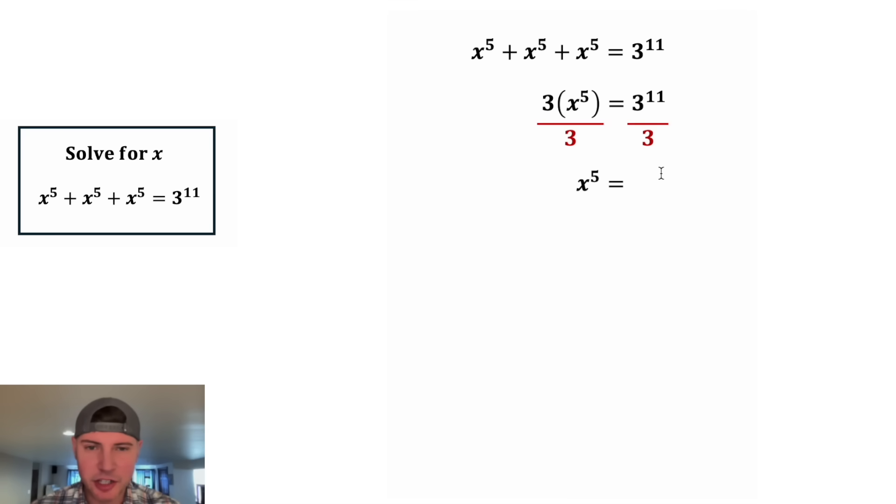And on the right hand side we can change this 3 into 3 to the 1st power. Anytime you have a power divided by a power and the bases match, you can subtract the exponents. So this becomes 3 to the 11 minus 1, and 11 minus 1 is equal to 10. So we have x to the 5th is equal to 3 to the 10th.